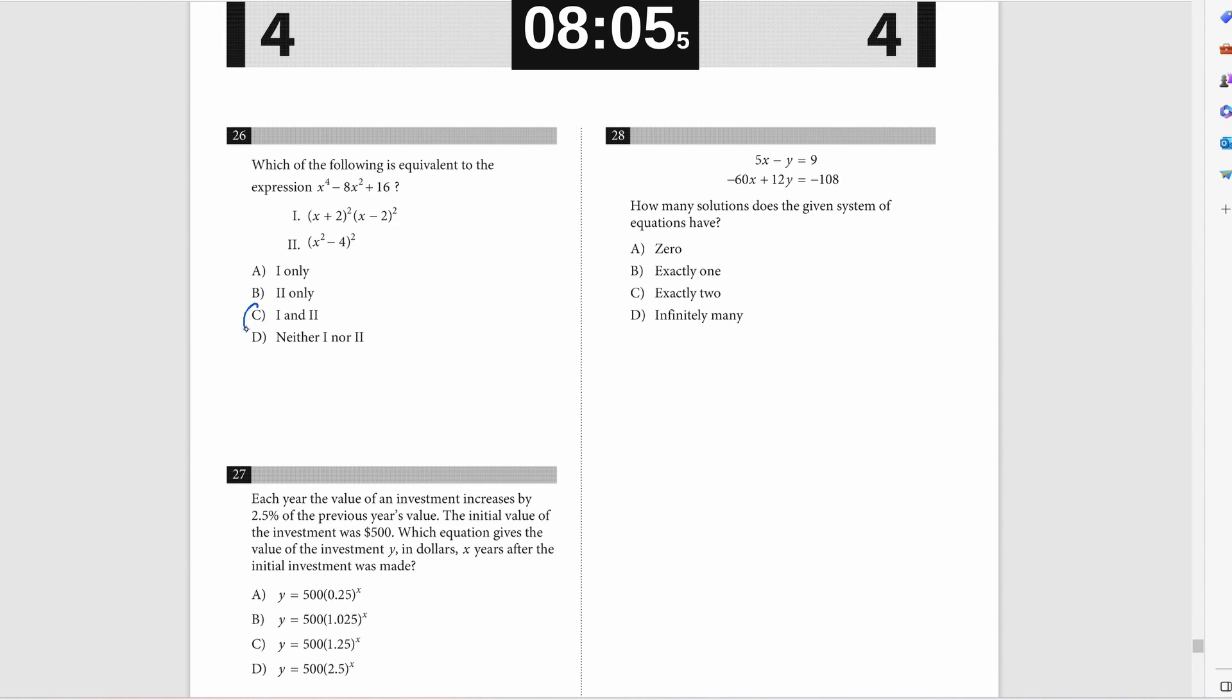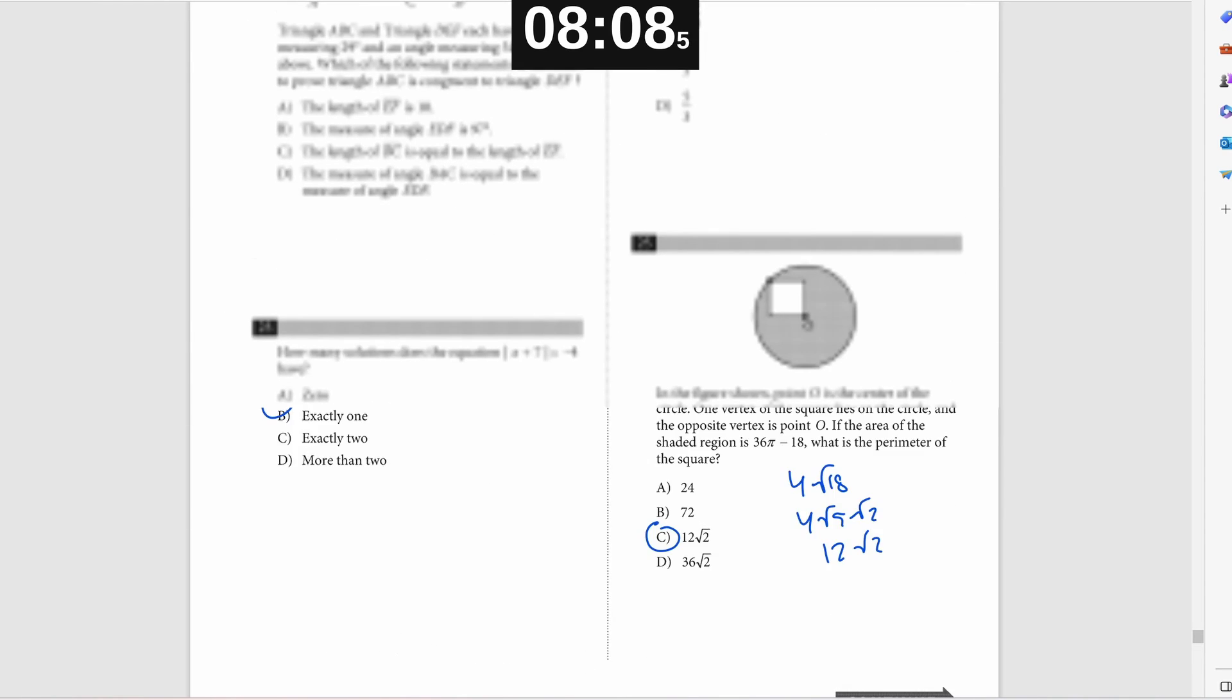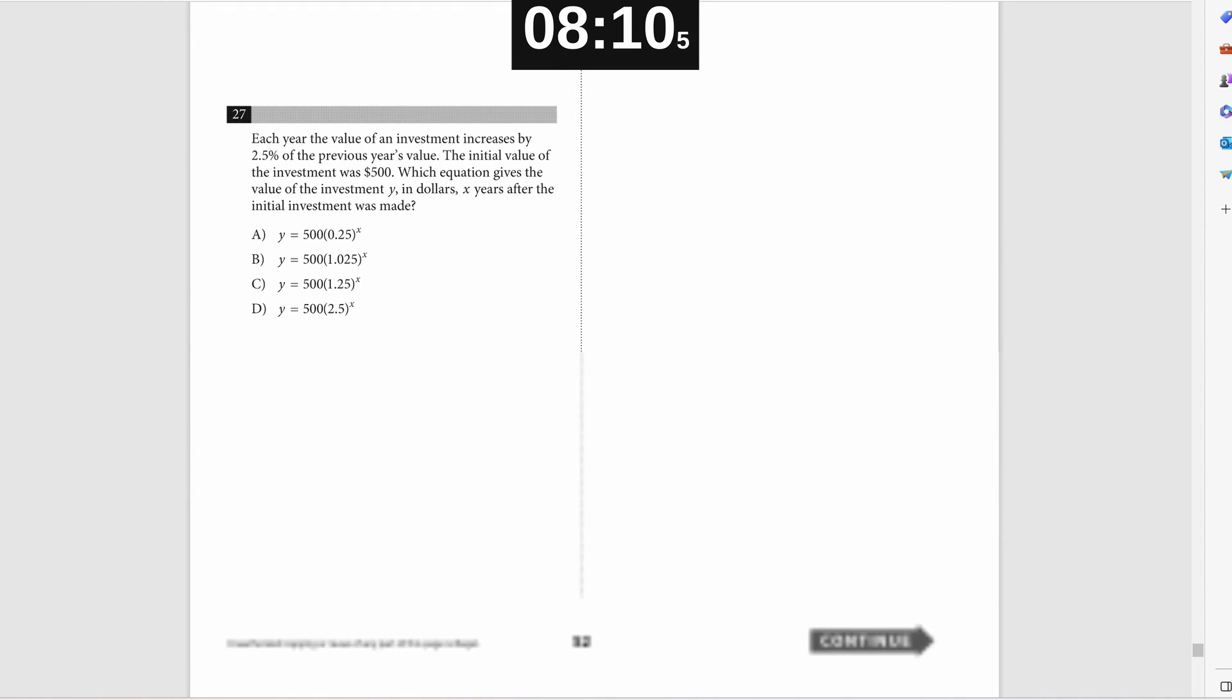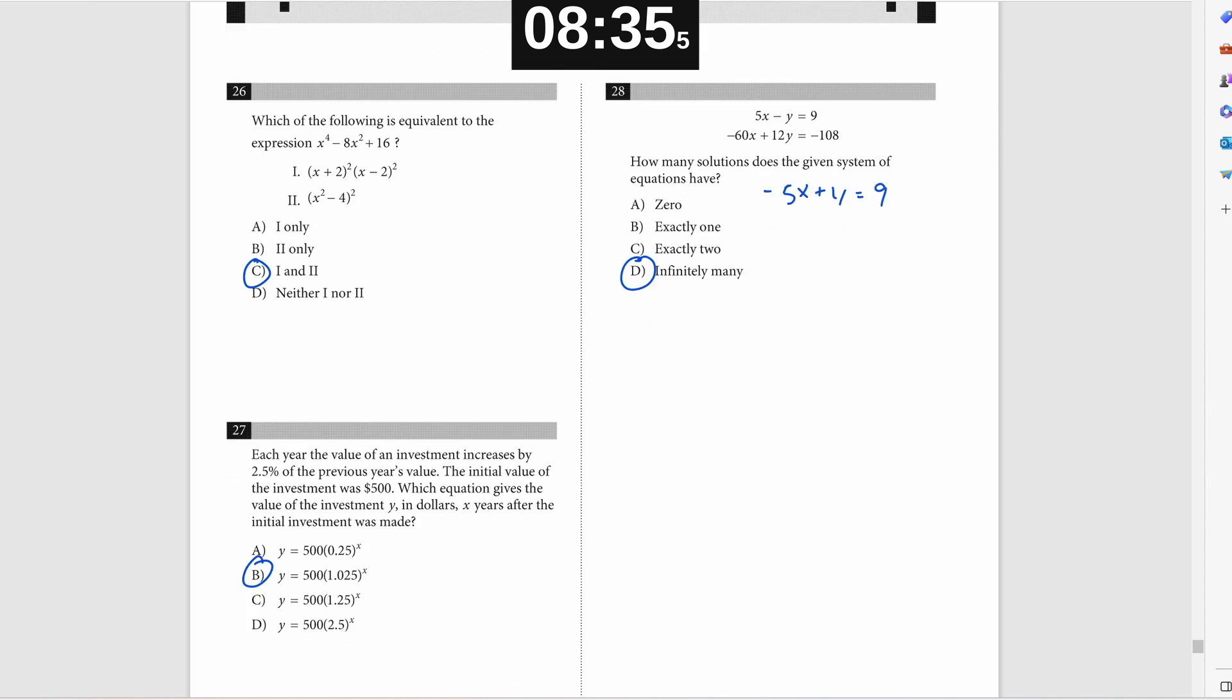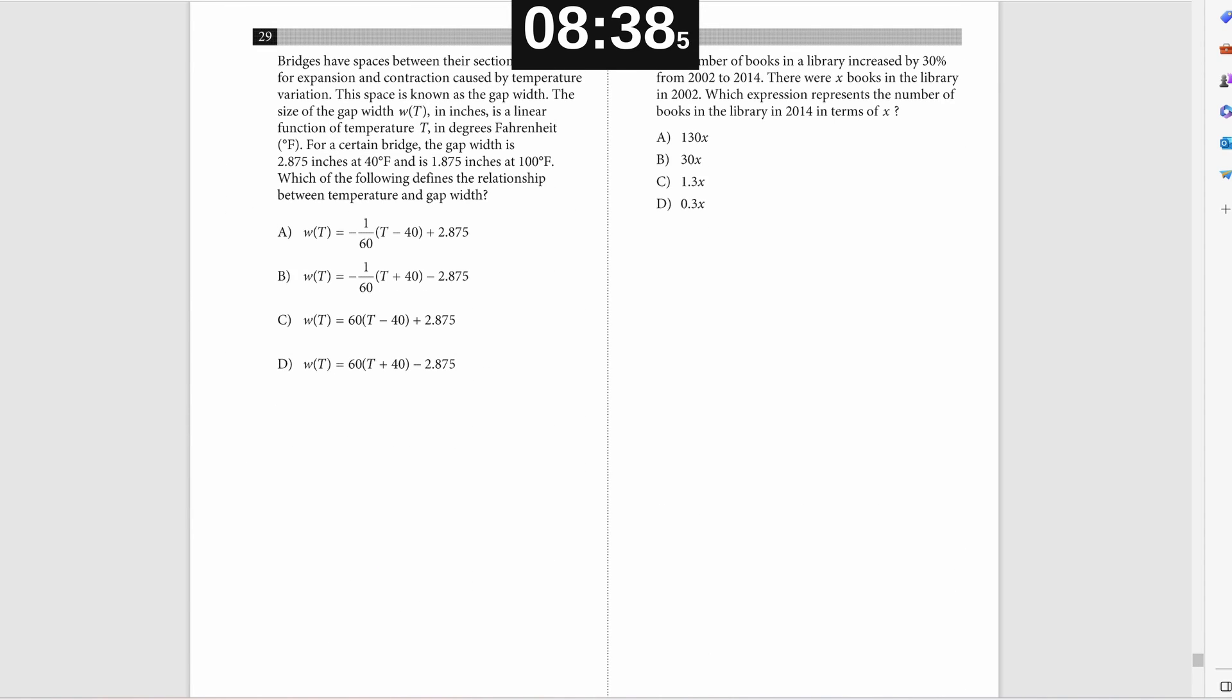Problem number 26. I'm kind of eyeballing this and saying, yeah, they do seem to be the same equation. I was a bit of a gamble. Problem number 27, if you have a 2.5% increase of each year, that means each year you're multiplying your previous year by 1.025, not 1.25, 1.025, because it's 2.5%. Number 28, there are infinite solutions because the second equation is just the first equation scaled up. So there's no way to actually solve for an x and y value. Any x and y would work for one equation and the other.